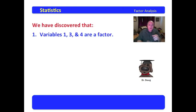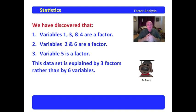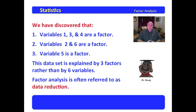So we have discovered that variables 1, 3, and 4 are a factor. Variables 2 and 6 are a factor. Variable 5 is a factor. And this data set that looks so ominous with 6 variables is, in fact, explained by only 3 factors. Factor analysis, for this reason, is often referred to as data reduction. It is a data reduction process because your 6 variables were reduced by correlational analysis into 3 factors of interest to us.